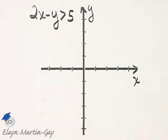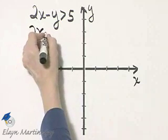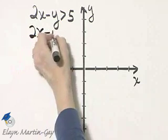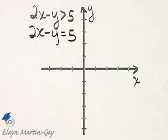Think of how we graph this linear inequality in two variables. We begin by looking at the corresponding equation. In this case, 2x minus y is equal to 5, and that's how we find the boundary line.